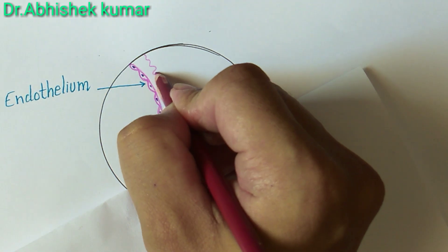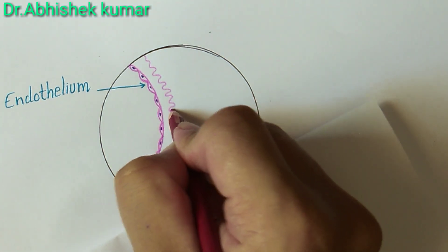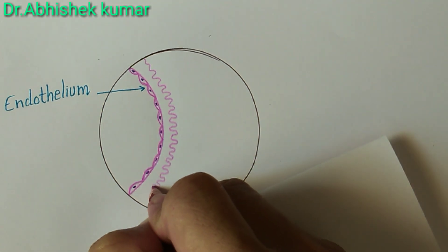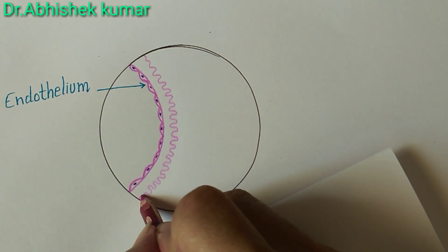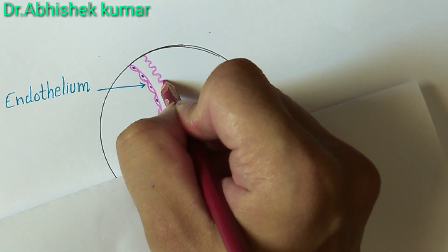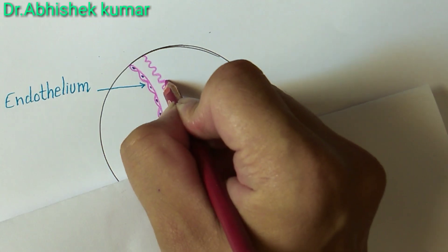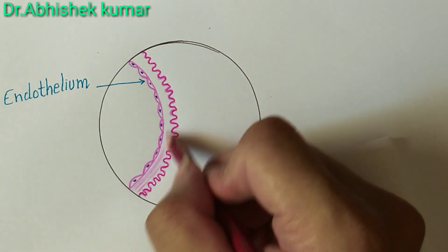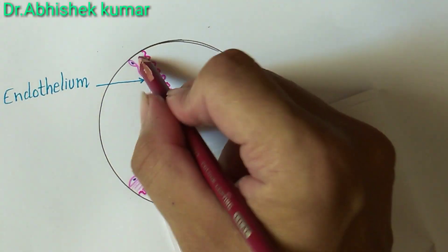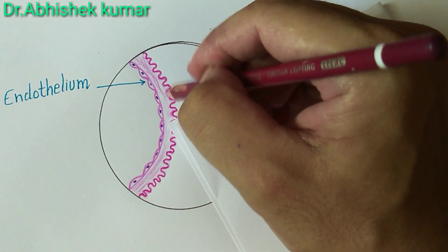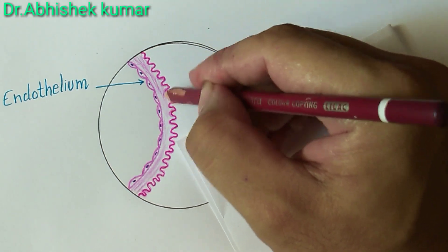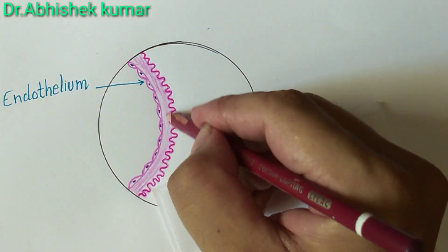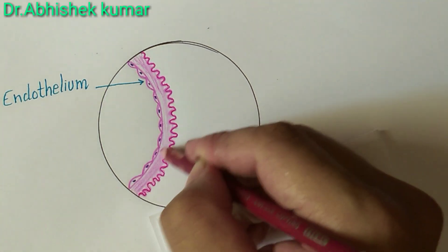Endothelium. Here the lamina we are making — which lamina? Internal elastic lamina. Basically, the internal elastic lamina is a bright refractile membrane, and it is very wavy due to contraction of smooth muscle in the tunica media part.